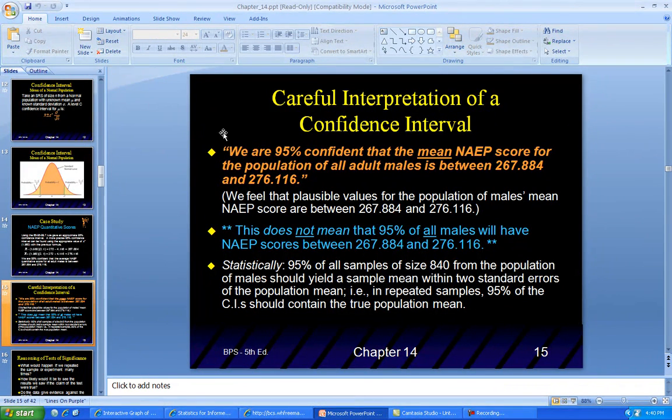Just to make sure we have the interpretation correct: We are 95% confident that the mean for the population of all adult males is between 267 and 276 with the decimals. This does not mean that 95% of all males will have scores between these values. Make sure you know the difference of how to state this and what it means.